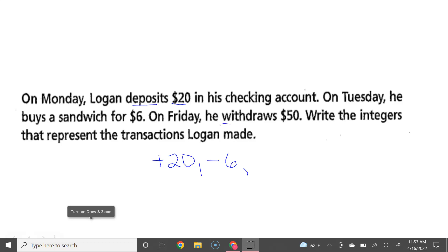On Friday, he withdraws $50. Withdraws means we're taking money out of the account. So the integer to represent that would be negative 5. Well, I hope this explains integers and opposites well. Have a great day. I hope this helps you.